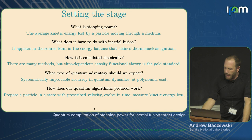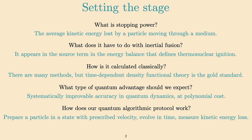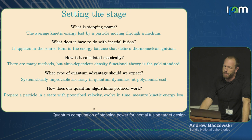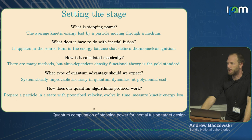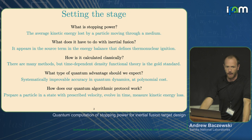Setting the stage — since this is a particularly physics-y talk, I almost want to call this an FAQ in some sense, though I've only given this talk once, so 'frequently' is a bit of a misnomer. Stopping power is in the title of my talk; we're looking at an algorithm for estimating stopping powers. A stopping power is the average kinetic energy lost by a particle moving through a medium, and this is involved in inertial fusion based on the title of the talk.